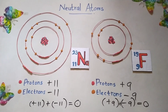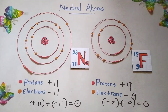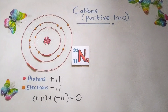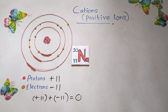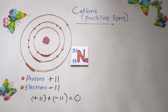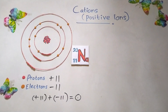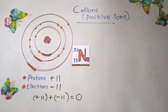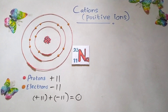Now we have to identify what are ions. Now you can see here the sodium atom which I took earlier. As earlier, 11 positive charges and 11 negative charges are there.